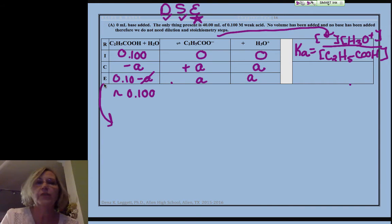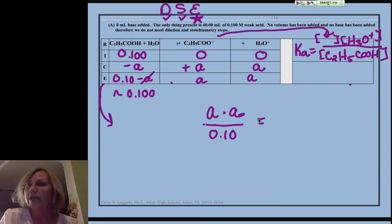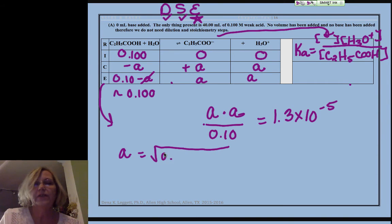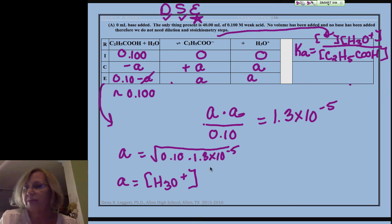So I get a times a over 0.10. Our equilibrium constant was given at the beginning as 1.3 times 10 to the minus 5. So a is going to equal the square root, I have a squared right, of 0.10 times 1.3 times 10 to the minus 5. My a, which remember represents my H3O+.